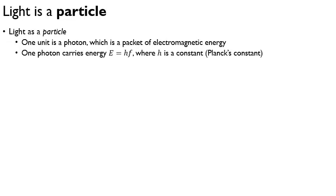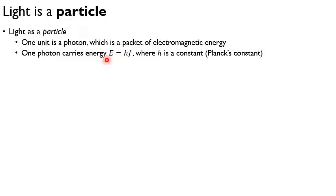One photon — the amount of energy it carries — depends on the frequency of the light. The energy of a photon is equal to Planck's constant H times the frequency. For now we're not going to use this for calculations, so don't worry about the value of H — it's a very small number. The key point is that our photon's energy depends on its frequency.